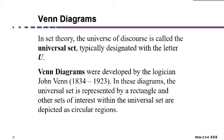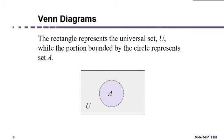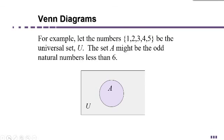Venn diagrams were developed by a logician named John Venn, who always represented the universal set with a rectangle and the sets within the universal set as circles. A very simple Venn diagram that has exactly one set depicted in it would be this one. You see U for the universal set and the circle A for some set within U.